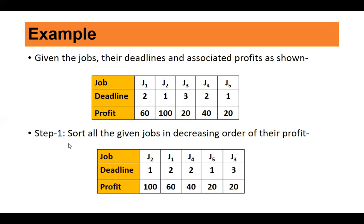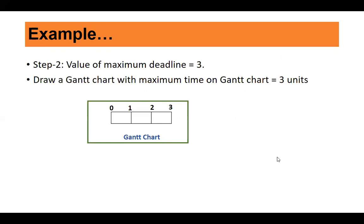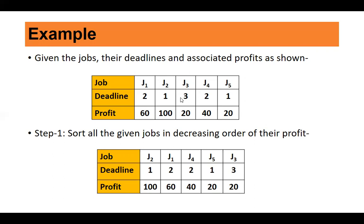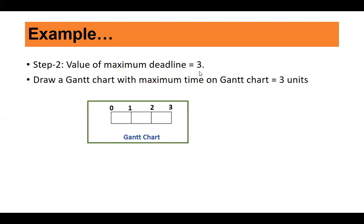Step one: sort all jobs in decreasing order of profit. After sorting, the order is: J2 (profit 100), J1 (profit 60), J4 (profit 40), J5 (profit 20), J3 (profit 20). Step two: the deadlines are 2, 1, 3, 2, 1 — so the maximum deadline is 3. We draw a Gantt chart with time slots from 0–1, 1–2, and 2–3.